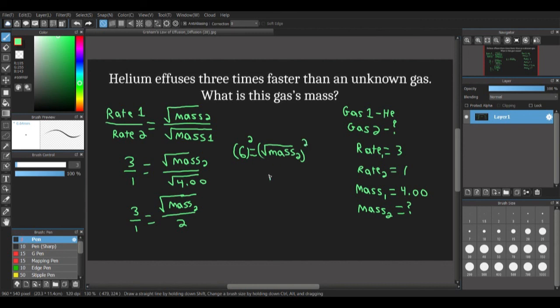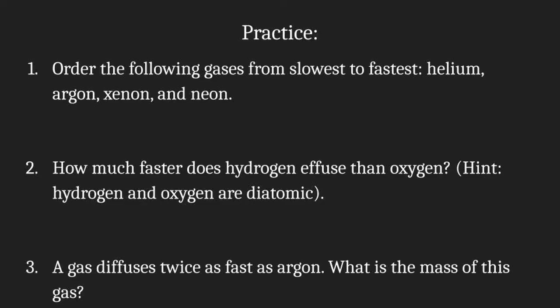So we get that mass₂ equals 36 grams, or 36 atomic mass units, depending on the scope of the question. Now that we've tried some together, here are 3 practice questions for you to try on your own.